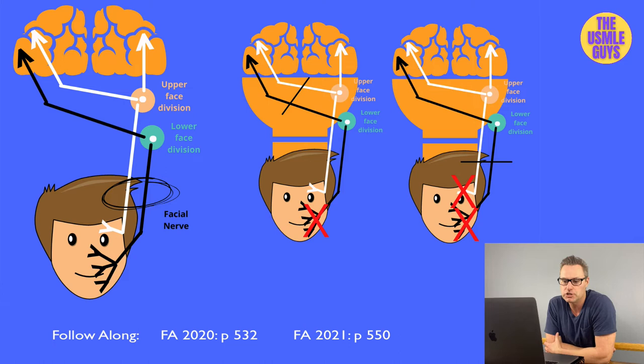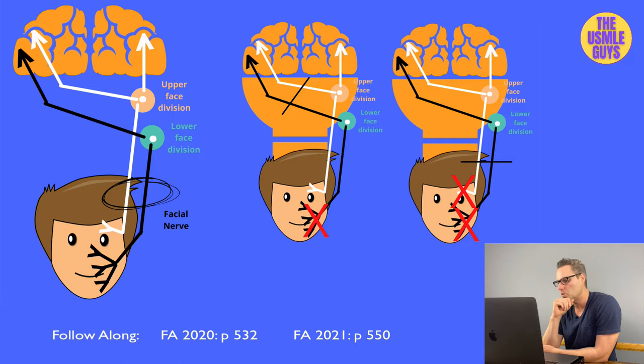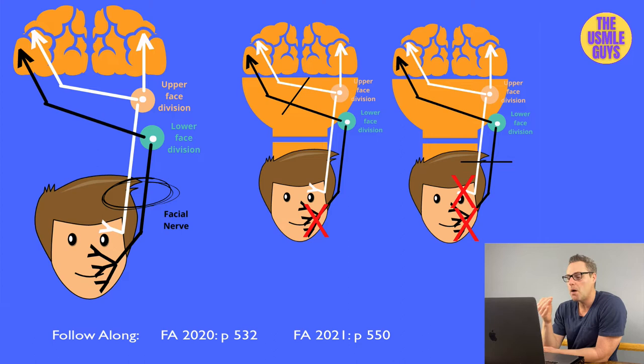Bell's palsy affects the facial nerve, which explains why it presents with weakness involving the forehead, eye, and mouth. To review: an upper motor neuron lesion affects the contralateral lower face, while a lower motor neuron lesion affects upper and lower facial muscles ipsilaterally.